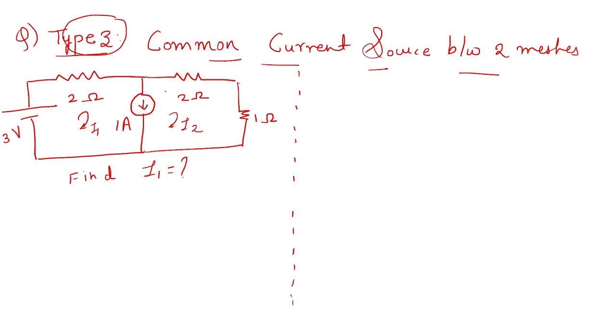In this problem, we have a common current source that is shared by both mesh 1 and mesh 2. The question asks us to find the value of I1.